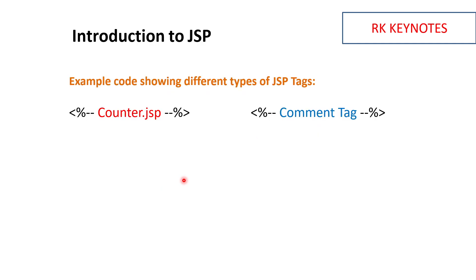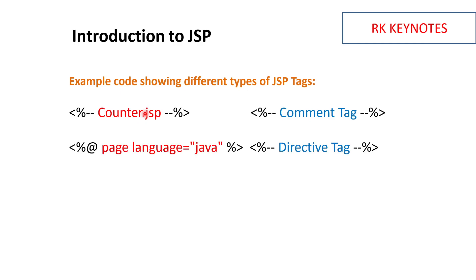These tags are most important — there are five tags. The first tag is the comment tag. If you want to comment, you use the angle brace and percentage sign with double minus signs. Within that, you can write something and it will be commented.